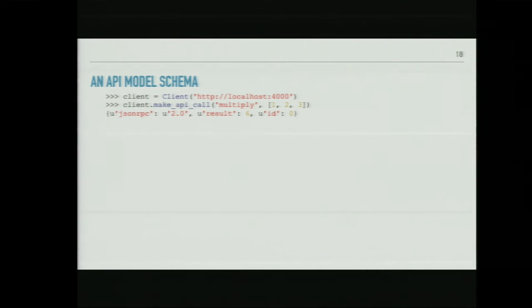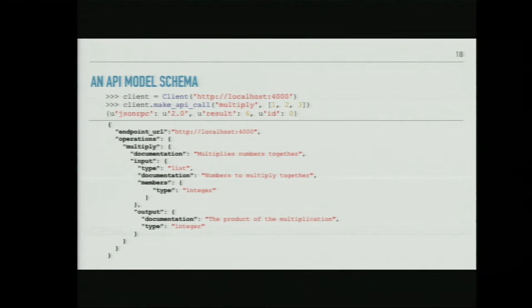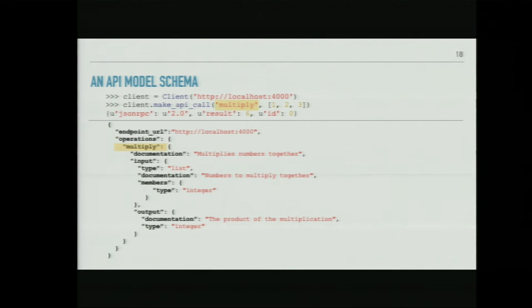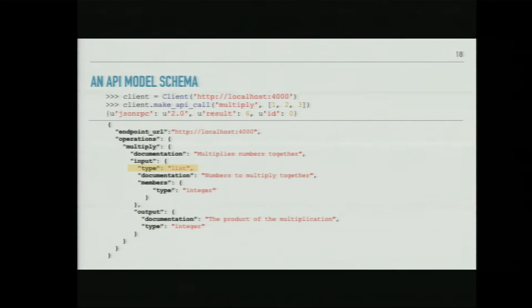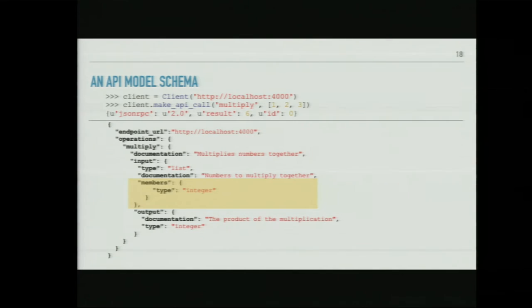Here's our API model schema — simpler than Boto3's or Swagger's but effective for this demo. In the schema you identify the endpoint URL and provide the operations available. We only have multiply for now. For each operation you can specify documentation, the input structure, and the output structure. The input type is a list, so we use positional arguments; you can describe the input and model each element as an integer. The output similarly has documentation and specifies an integer return type.